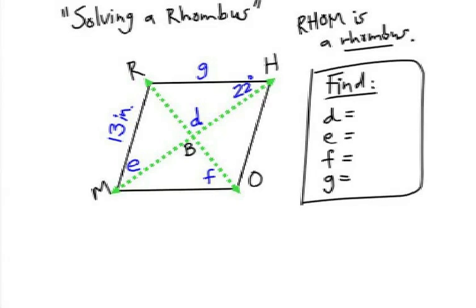In this diagram, I have a quadrilateral labeled as a rhombus, RHOM. Notice that the diagonals intersect at point B.